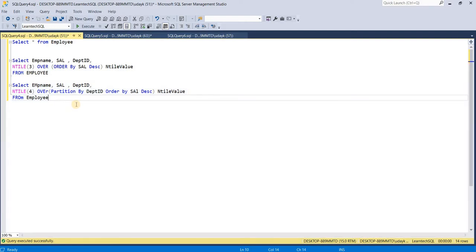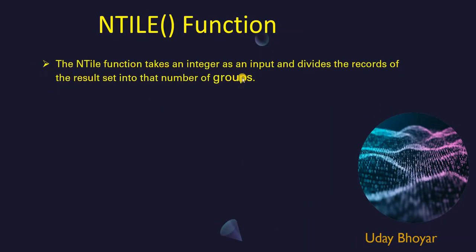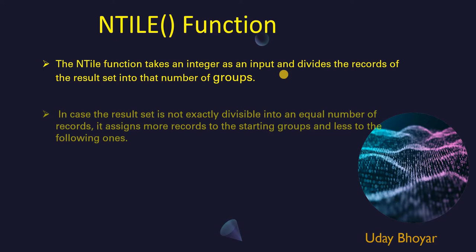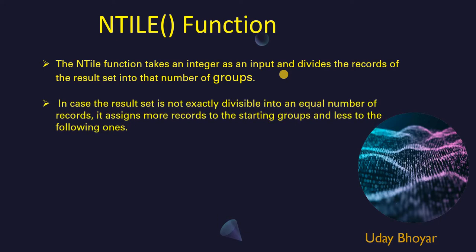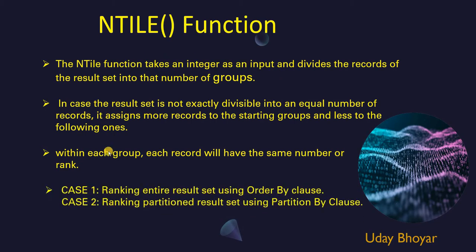To summarize: the NTILE function takes an integer as input and divides the records of the result set into that number of groups. When the result set is not exactly divisible into equal parts, it assigns more records to the starting group and fewer to the following ones. Within each group, each record will have the same rank value. There are two main use cases: ranking the entire result set using just the ORDER BY clause, and ranking partitioned results using the PARTITION BY clause.